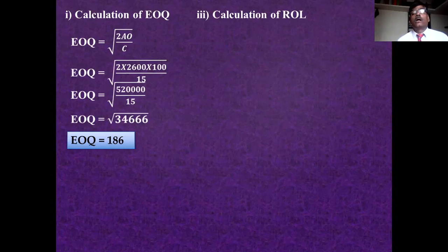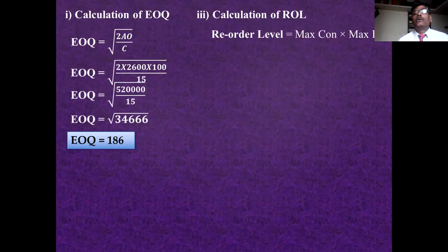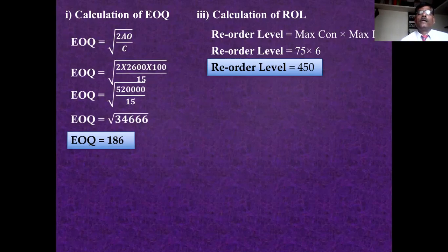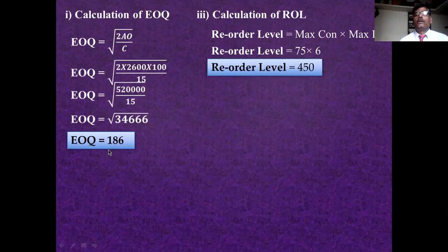The second question is maximum and minimum stock level, but ROL is required first. Reorder level = maximum consumption × maximum delivery period = 75 × 6 = 450 units. This means whenever there are 450 units in your godown, you must place an order for new stock — specifically for 186 units (the economic order quantity). That is called the reorder level.